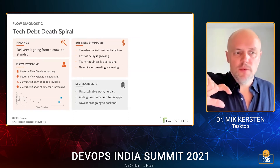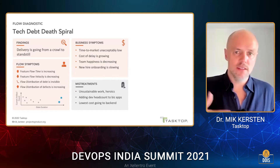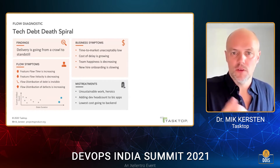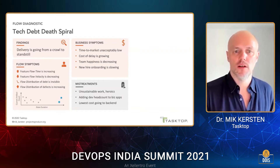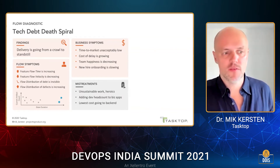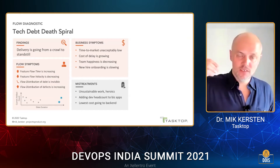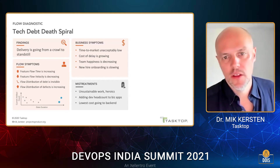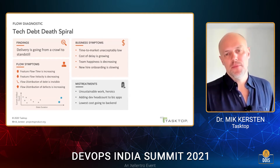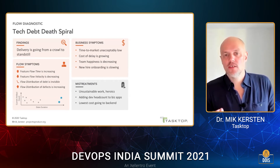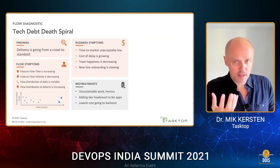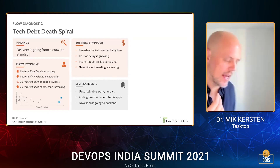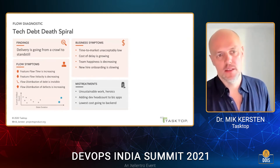The mistreatments here are unsustainable work and heroes — just telling the teams to get more done to hit those deadlines. That's a losing battle because we're not helping the teams by addressing the constraint; we're just putting more work on them, and that work is getting blocked for the same reasons. Adding development headcount to business applications doesn't work — it's like trying to stuff more ships through a clogged Suez Canal. In this case, the lowest cost was going to the backend constraint, which had contractors shifting in and out, and this was just exacerbating the constraint.